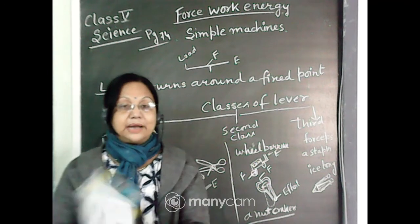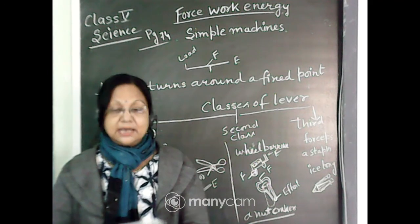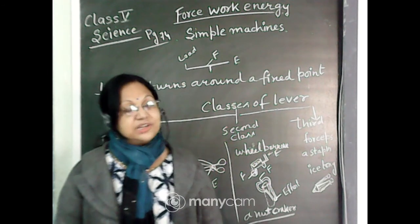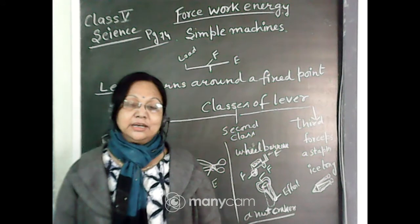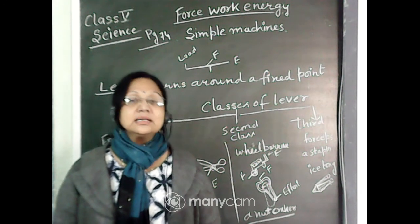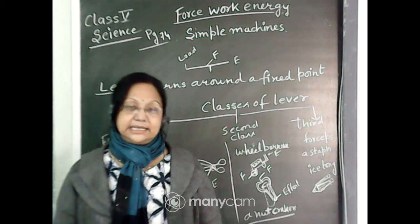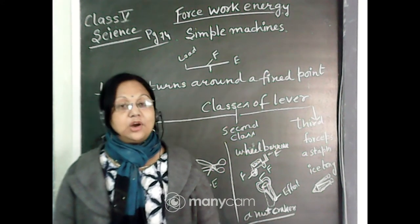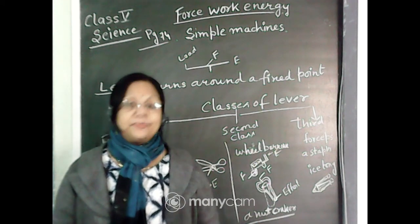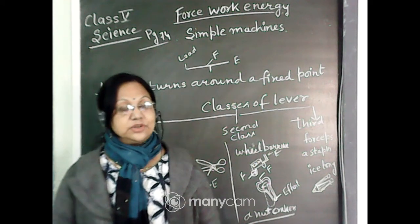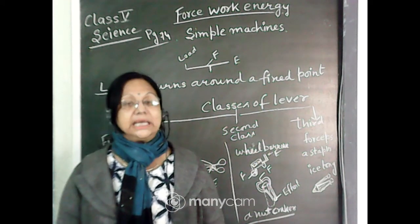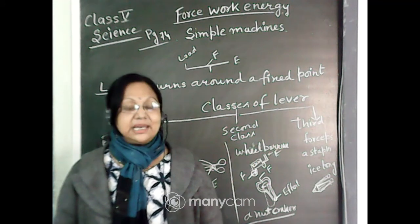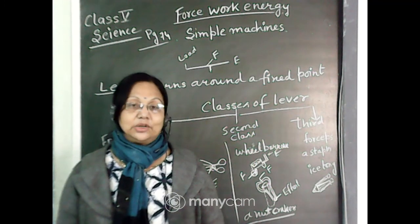The last part of this chapter is the simple machine. What is a machine actually? Machine means something which makes our work easier. The tool or a device, with the help of that device or tool, when we are making our things very easy, that is called the machine.